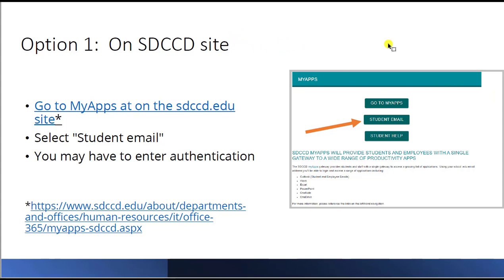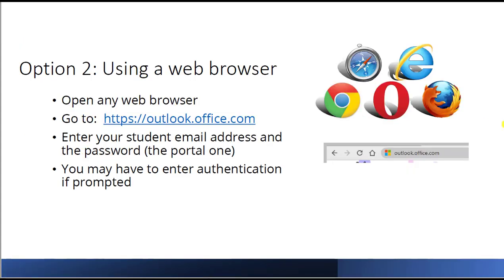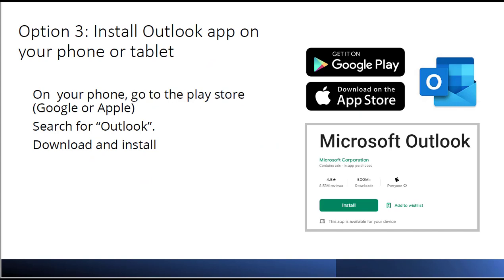The first option for viewing your email is on the SDCCD official site — select student email from there. The second option is using a web browser: open any web browser, go to outlook.office.com, and enter your student email address and portal password. Remember, if you have multiple accounts, make sure to choose the student email account. The third option is to install the Outlook app on your phone or tablet from the Google Play Store or Apple App Store, search for Outlook, and hit install.